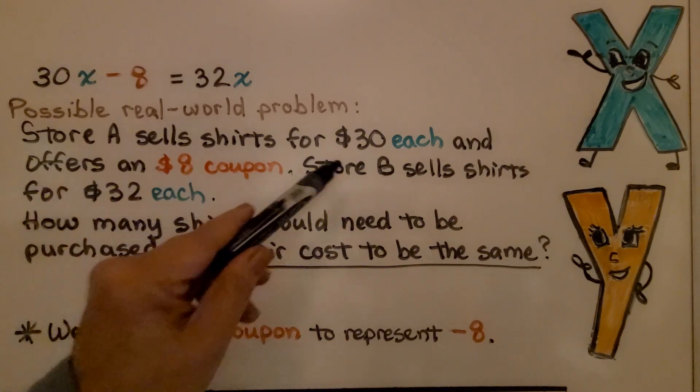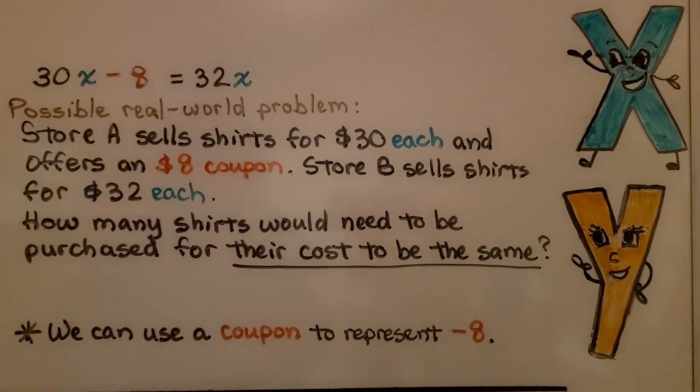So again, we're comparing store A to store B and the cost of the shirts. We can use a coupon to represent the minus 8 because we're taking it away from that fee.